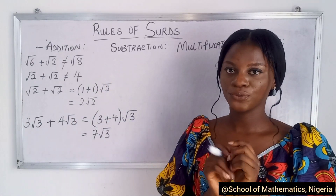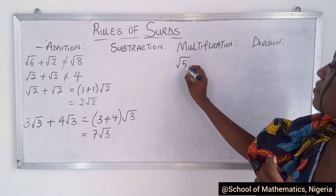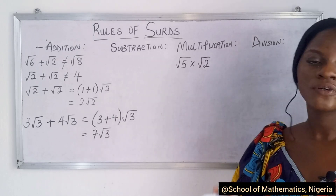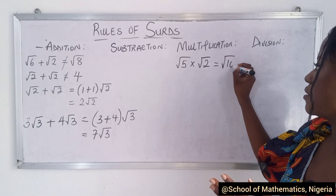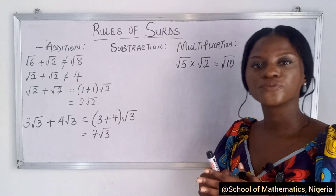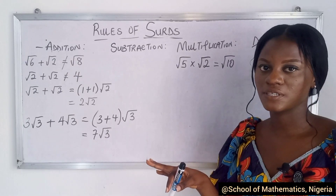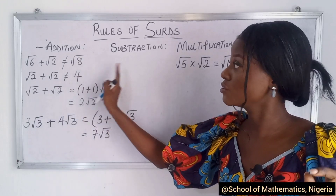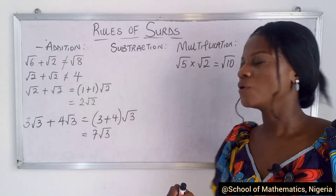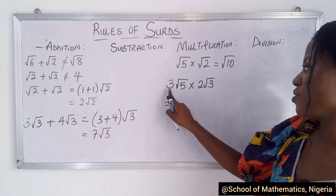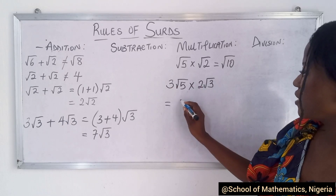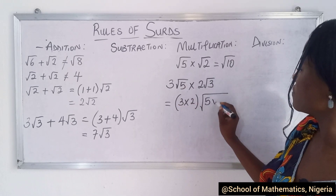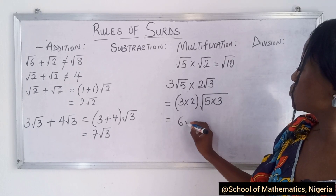Now let's move to multiplication. For root 5 times root 4, using our rules for surds, this can simply be multiplied to give root 20 — or root 10 depending on the values. Remembering the multiplication rules: the values outside multiply each other, and the values inside the roots multiply each other. So for 3 root 5 times 2 root 3, you have 3 times 2 outside giving 6, and 5 times 3 inside giving root 15 — so the answer is 6 root 15.